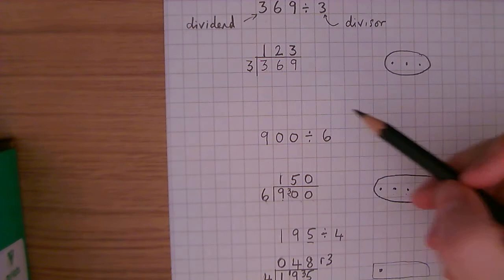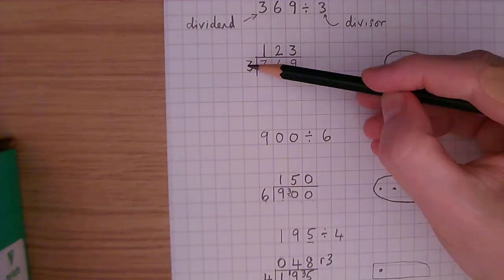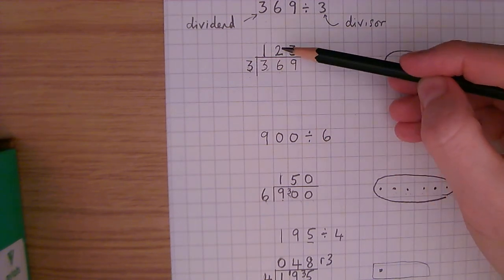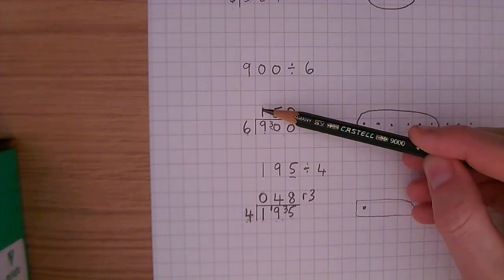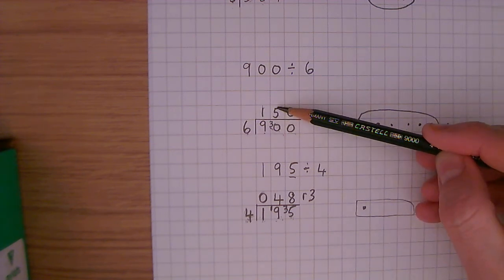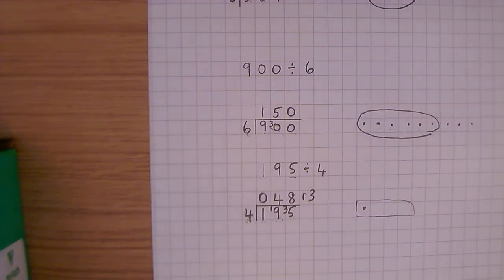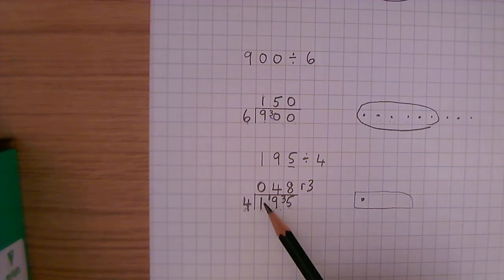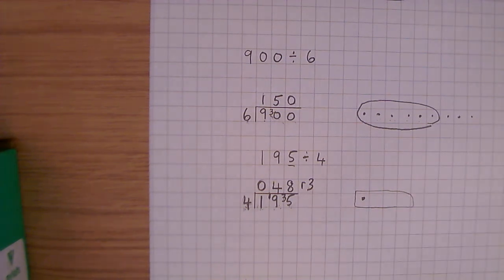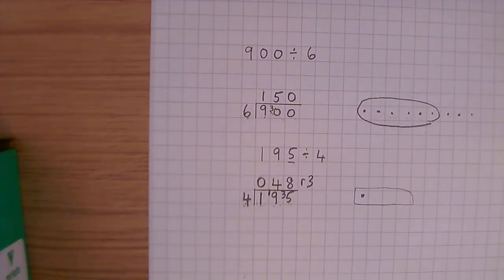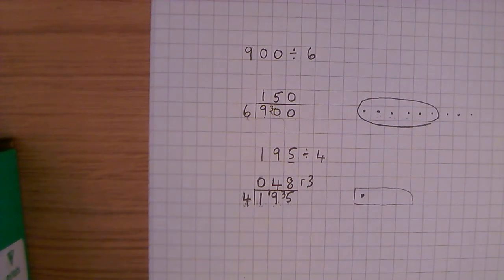Let's go through what we've done. We did 369 divided by 3. 3 into 3 goes once. 3 into 6 goes twice. 3 into 9 goes 3. 123. 900 divided by 6. 6 into 9 goes once, remainder 3. 6 into 30 goes 5, no remainder. 6 into 0 is 0. And last, 195 divided by 4. 4 into 1 doesn't go. The 1 goes there, on the shoulder there. 4 into 19 goes 4, remainder 3. 4 into 35 goes 8, remainder 3. If you would like to see how we write remainders as mixed numbers, or how you'd like to see how we express our answer as a decimal, then watch the next video about short division.